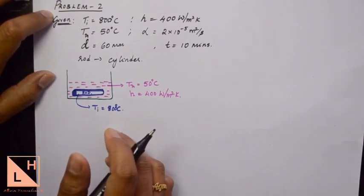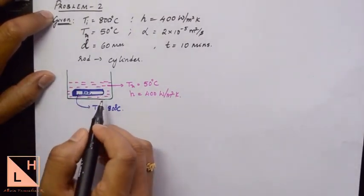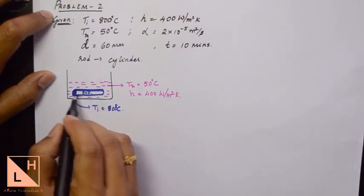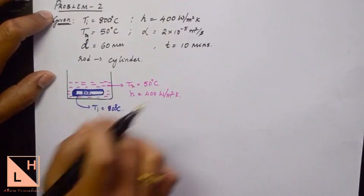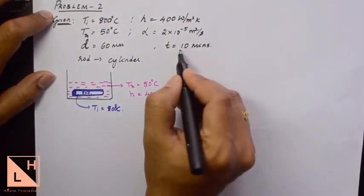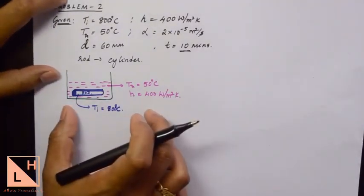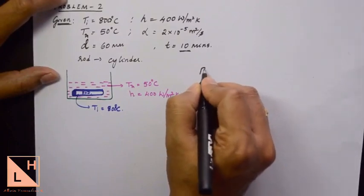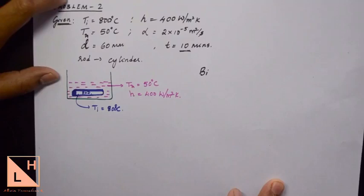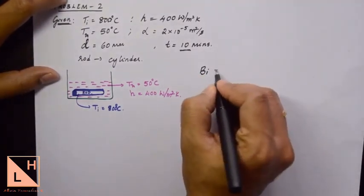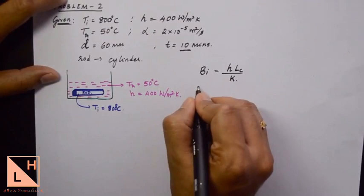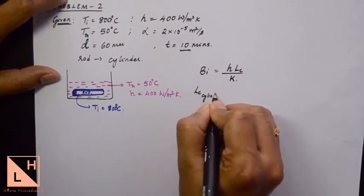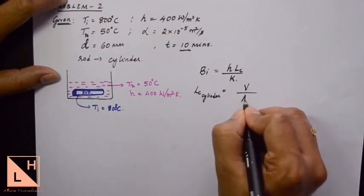We need to calculate the centerline temperature of the cylinder, how long it takes for the centerline to reach 100 degrees Celsius, and the energy removed into the oil over 10 minutes. Before starting the solution, it is important to calculate the Biot number, because based on the Biot number we determine whether we can use lumped system analysis or not.